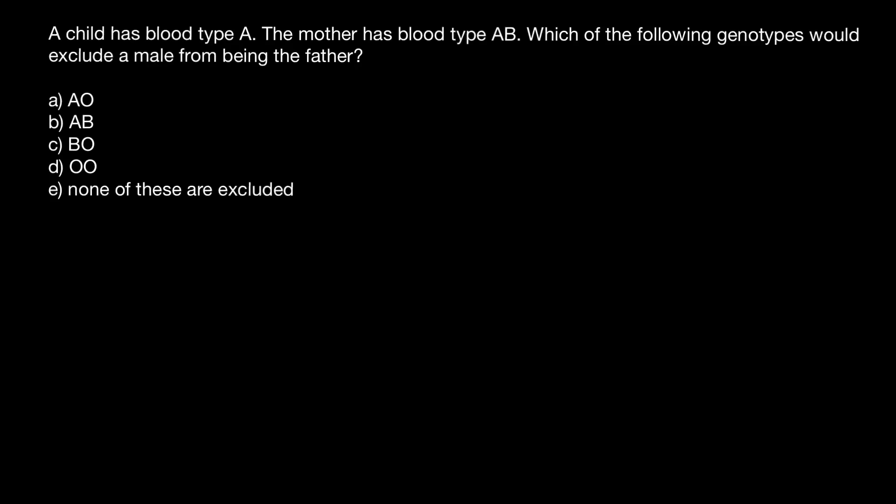Hello and welcome to Nikolai's genetics lessons. Today's question is: a child has blood type A, the mother has blood type AB — which of the following genotypes would exclude a male from being a father?